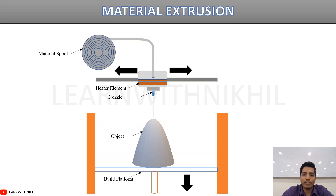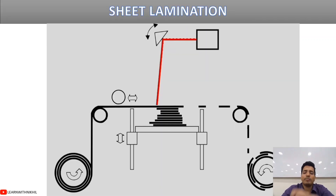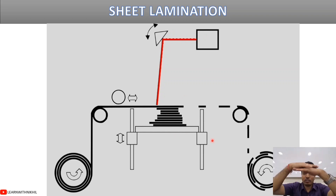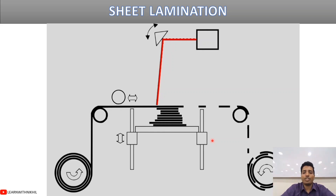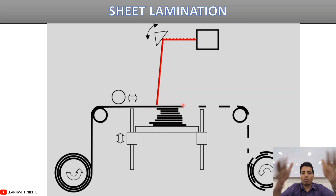Sheet lamination works similarly to a CNC machine. A laser comes from the top, is deflected by a mirror, and cuts sheets of equal size. Each layer sheet is cut according to the required cross-sectional shape of the object. The sheets are stacked and cut layer by layer to build up the 3D object. This type is not commonly used but it does exist.